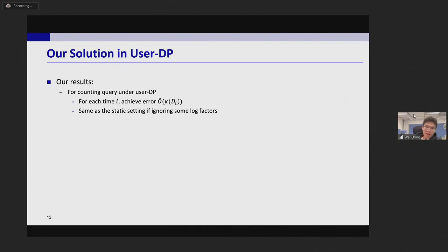With this idea for counting query under user-DP, for each time i we achieved error to the big O kappa Di, which is the same as the static setting if we ignore some log factors. Besides we also extend this idea to other functions. For some queries we also achieved the same error as the static setting, but for max, distinct count, and maximum frequency we show the same error as the static setting is unachievable.